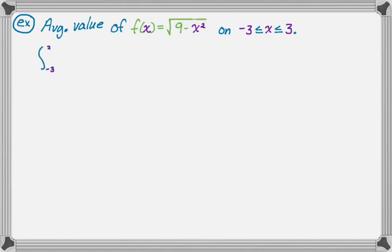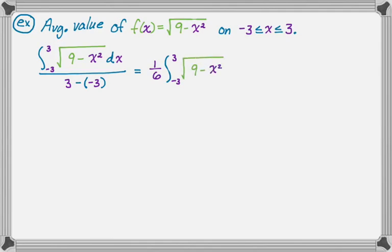So it's the integral from -3 to 3 of √(9 - x²)dx over 3 minus (-3). This is going to be 1/6 and then still this integral. There's kind of a problem here,